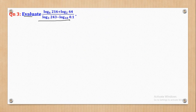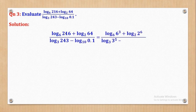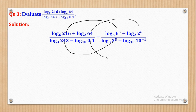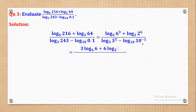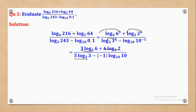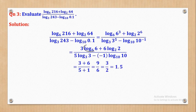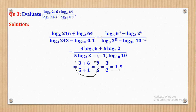Question 3 says: evaluate the expression. First, note that 216 equals 6 to power 3, 64 equals 2 to power 6, 243 equals 3 to power 5, and 0.1 equals 10 to power negative 1. Bringing each power down, each logarithm of a base equal to itself gives 1, so we get 3, 6, 5, and negative 1 respectively. Negative times negative gives positive. Simplifying all of this gives the answer 1.5.